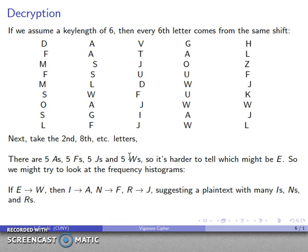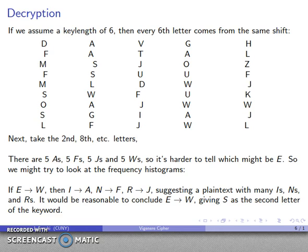If E gets sent to W, then these common letters A, F, and J in the ciphertext must have come from letters I, N, and R in the plaintext. That says I have a plaintext with lots of Es, Is, Ns, and Rs. That's not unusual, so it seems reasonable to think that my second substitution is going to come from E to W, which tells me that S is going to be the second letter of the keyword, that A is going to be sent to the letter S.